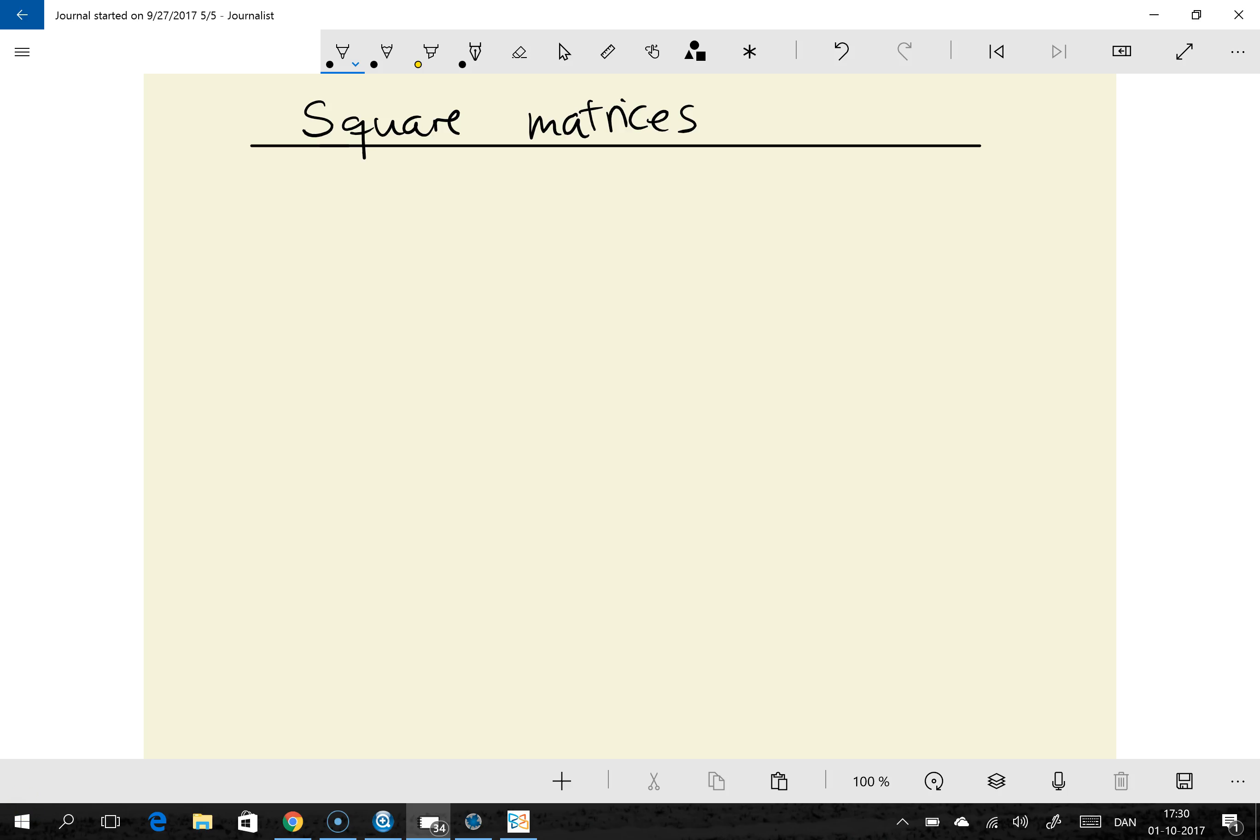So far we've regarded matrices as a convenient way of describing a system of linear equations, such as this system consisting of three equations in three unknowns. You've seen this several times before.